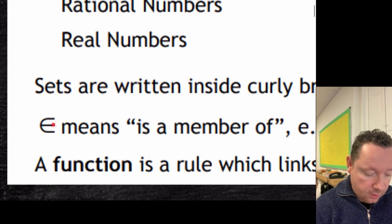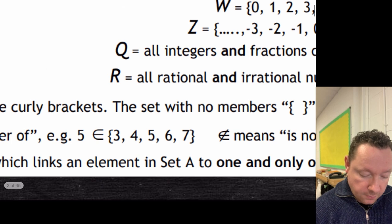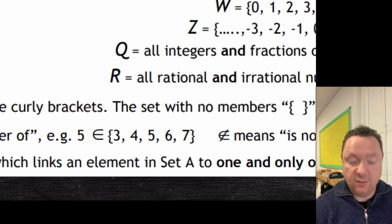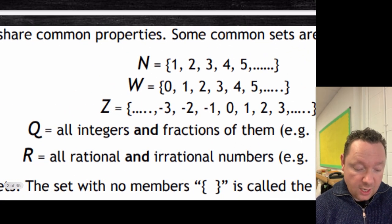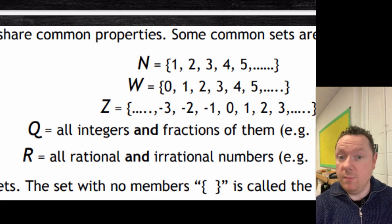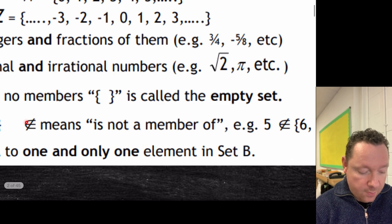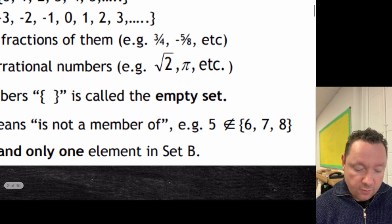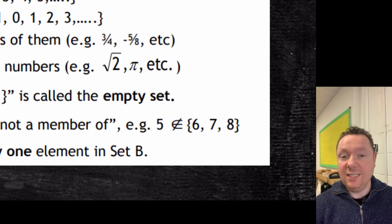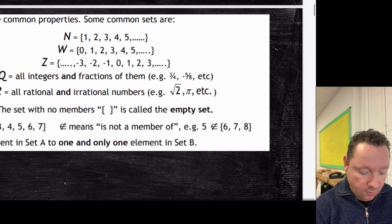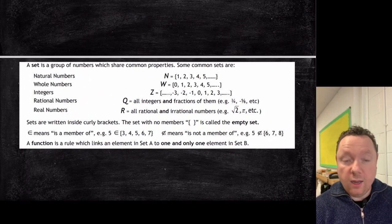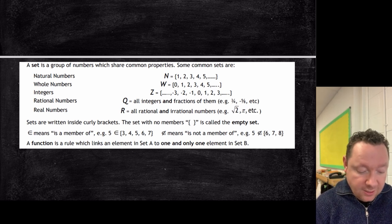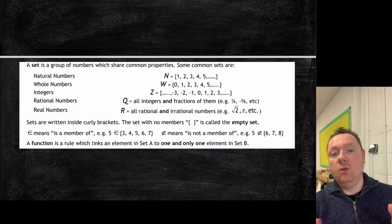This symbol here means 'a member of'. So five is a member of the set {3, 4, 5, 6, 7} — of course it is. Five is also a member of the natural numbers, whole numbers, integers, and rational numbers — it's a member of all those sets. If I write the member-of symbol with a line through it, it just means 'not a member of'. So five would not be a member of {6, 7, 8} because that set only contains 6, 7, and 8. In terms of functions, a function is a rule which links one set of numbers to another, but only one to one.